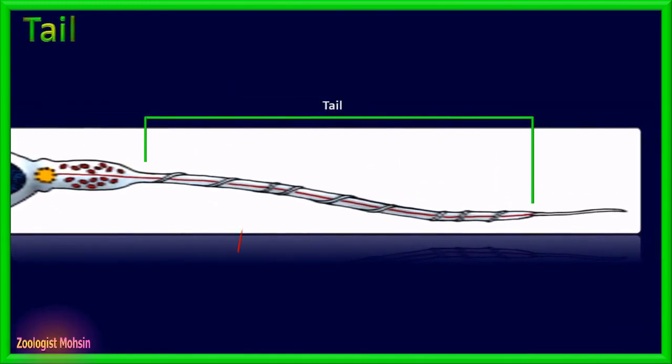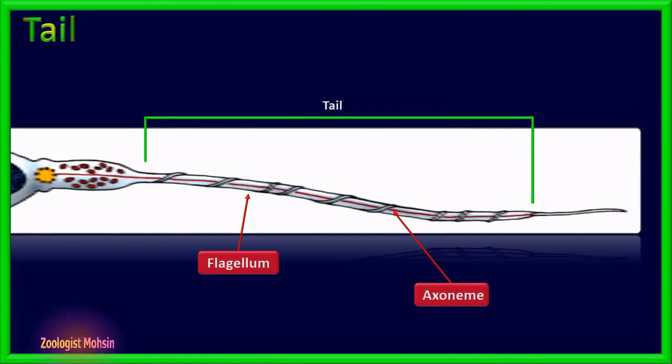This long process is the flagellum, which is the propelling organ while moving to the destination. The axoneme is the structure which originates from centriole microtubules. These microtubules are basically tubulin protein. Although tubulin is the major protein in the axoneme, there are other proteins which help in flagellar movement.